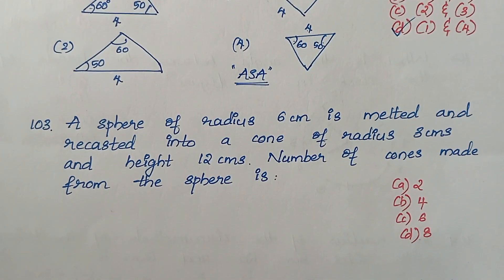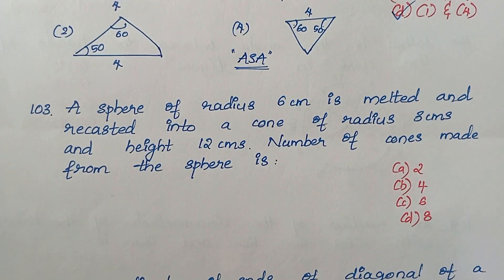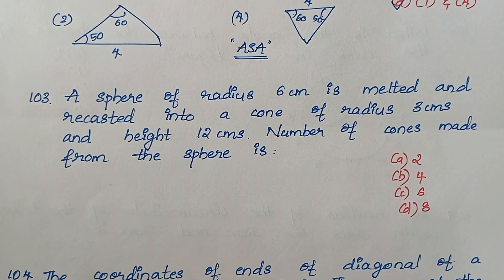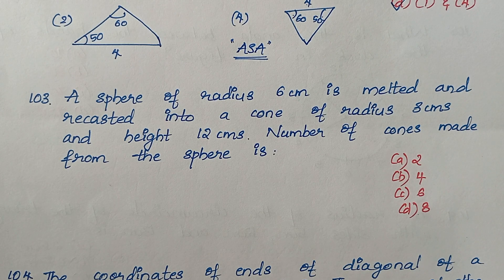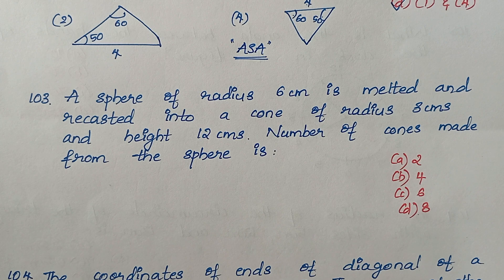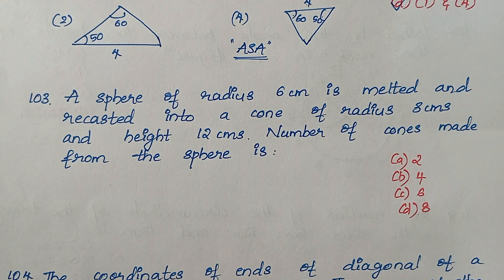Question 103: A sphere of radius 6 cm is melted and recast into cones of radius 3 cm and height 12 cm. We need to find the number of cones made from the sphere. We use the volume of the sphere divided by the volume of one cone.